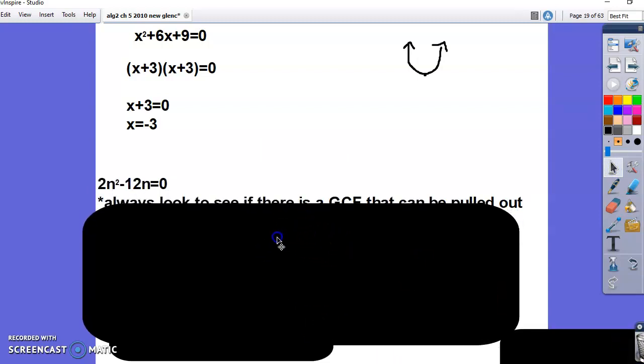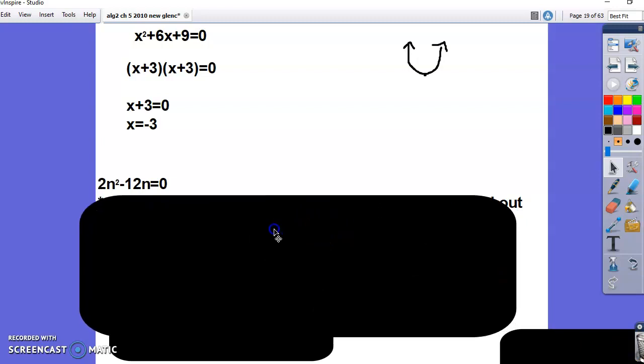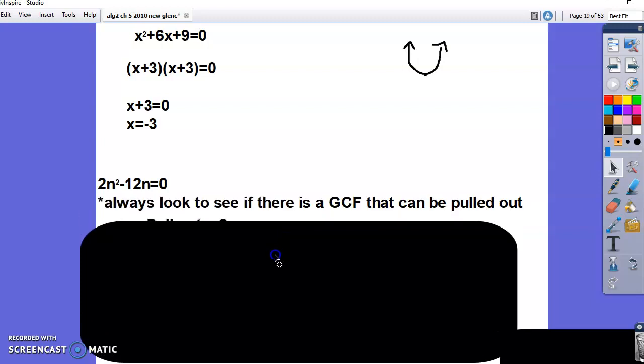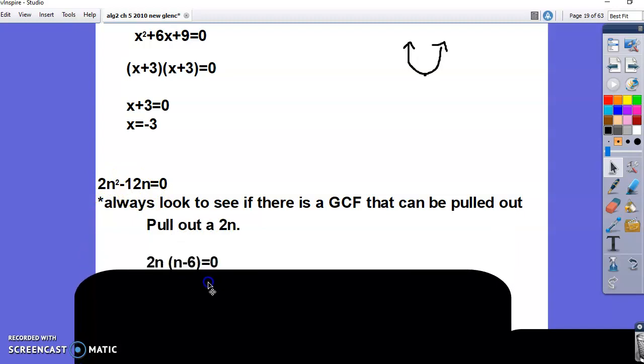Okay, the next one is 2n squared minus 12n. On a lot of your homework problems, you're going to need to pull a GCF out. You're looking for a number or a variable that can come out of both terms. You can pull a 2 out of both of these and an n, so you want to pull the 2n out. When you divide this by 2n, you get n. When you divide negative 12n by 2n, you get negative 6.